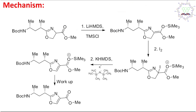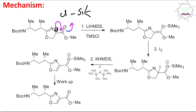The reaction starts by abstracting H-a, generating a carbanion. This negative charge is resonance stabilized — it can delocalize here and here. Ultimately the negative charge resides on oxygen. TMS-Cl is trimethylsilyl chloride. The silicon-chlorine bond is not very stable, so the negative charge attacks the silicon and chloride leaves.